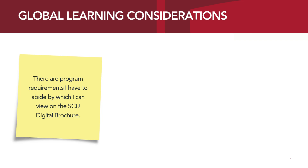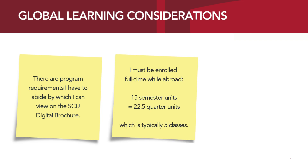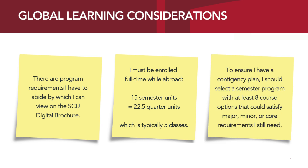Because I've been using the Global Learning Advising module in Camino and I've attended study abroad peer advisor hours in Aloysius Farsi Hall, I know there are going to be program requirements I have to abide by, which I can always view on the program's SCU digital brochure. I must also be enrolled full-time while abroad, and SCU considers full-time enrollment on a semester program as 15 semester units, which is typically five classes abroad. To ensure I have a contingency plan, I should select a semester program with at least eight course options that can satisfy major, minor, or core requirements I still need.